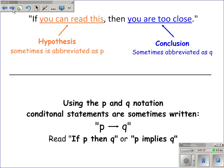Using this p and q notation, we can write conditional statements as p arrow q, read as 'if p then q,' or 'p implies q.' This notation will come back later in the video when we talk about other kinds of conditional statements.